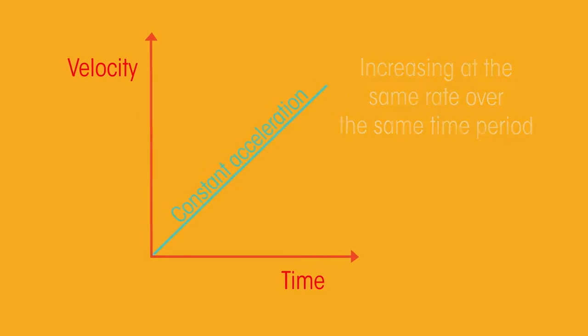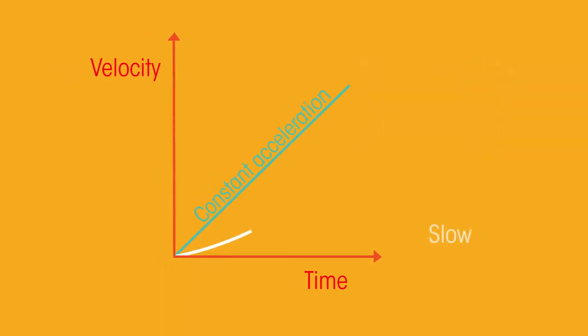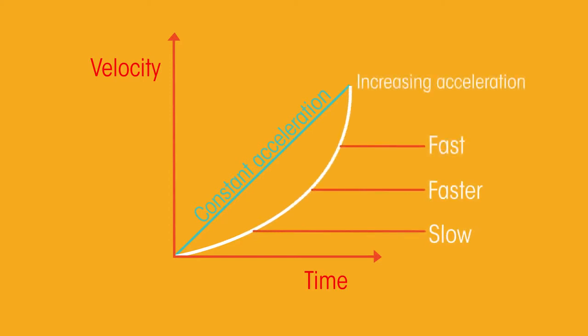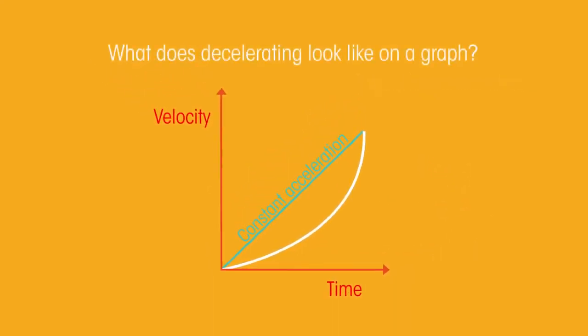But maybe you start off just giving a little gas, and then once you're on the motorway you want to hit full speed sooner, so you accelerate faster. This would be a curved line like this on the graph. Or maybe you're decreasing your acceleration, so you started off with a big push accelerating quickly, and now you're accelerating up to your max speed at a slower rate.